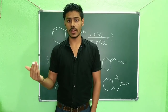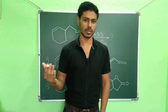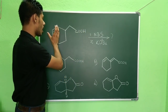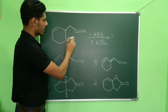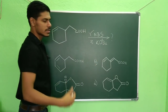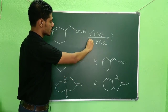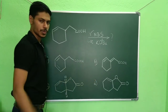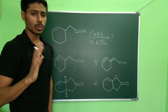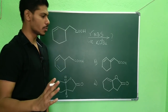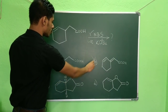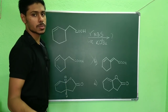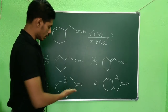The concept is iodolactonization, or more generally, halolactonization. The question shows a carboxylic acid attached to an alkene, treated first with NBS (N-bromosuccinimide) and then with a strong base like potassium tert-butoxide. If you know the halolactonization mechanism, you can immediately discard options A and B because they are not lactones — halolactonization always produces a lactone.